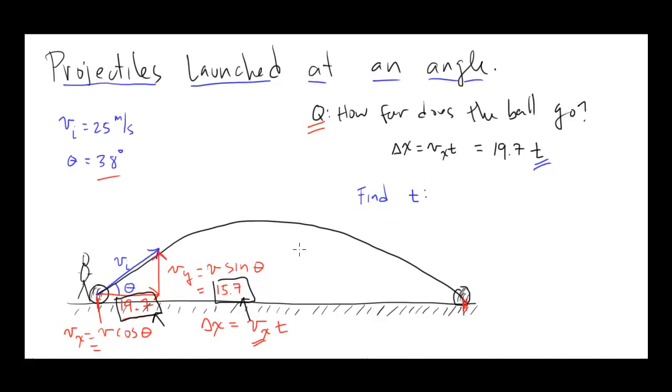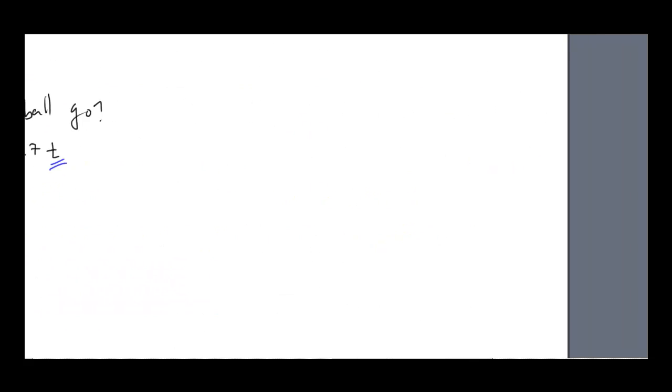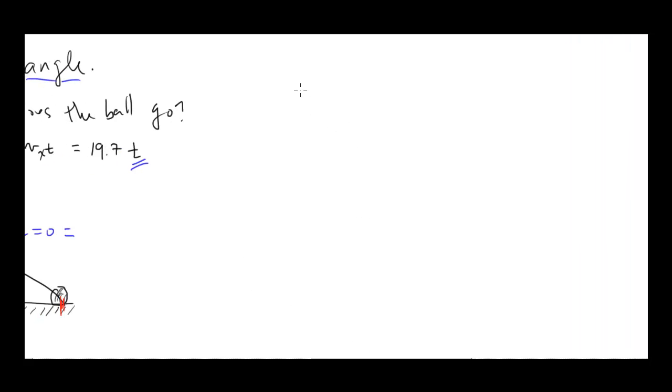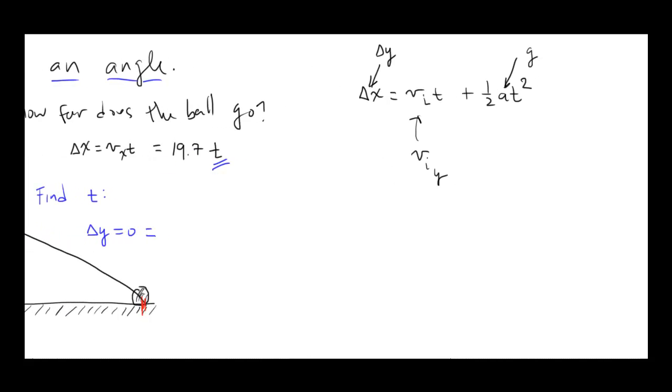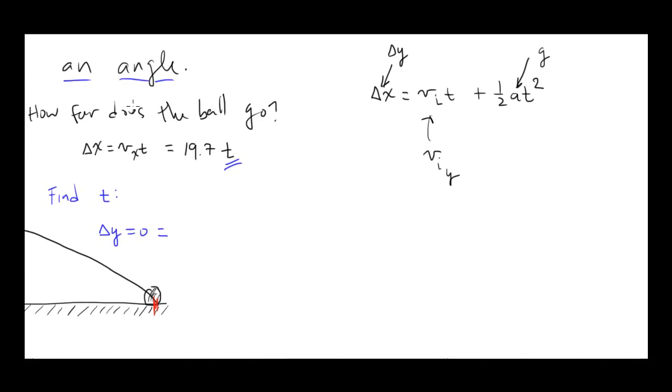So now we have to find t. Finding t comes from delta y. First of all, let's figure out what is our delta y? It starts on the ground, it ends on the ground, so delta y equals zero. What's our equation for delta y? Remember, when you're in the y direction, you need to use an acceleration equation. Our displacement with acceleration equation looks like this: v initial t plus one-half at squared. Remember that equation, one of our kinematic equations. This is the equation we're going to use, but I call delta x delta y because I'm in the y direction. The acceleration, remember, is now g. And the v initial is only v initial in the y direction. So that's the equation I'm going to use here.